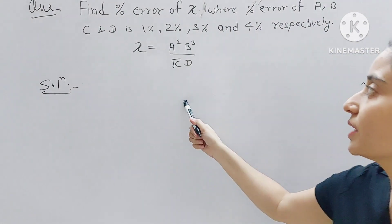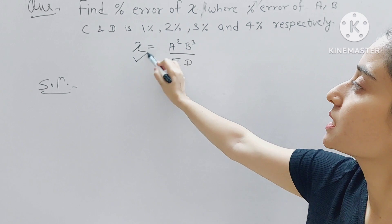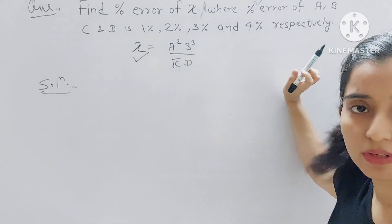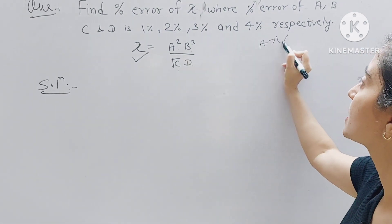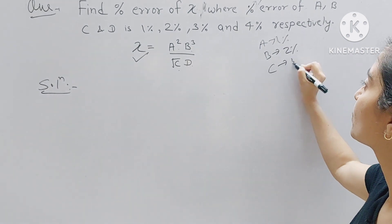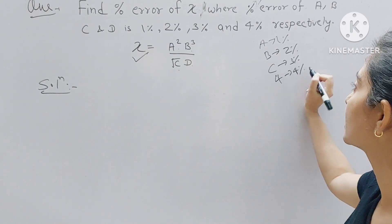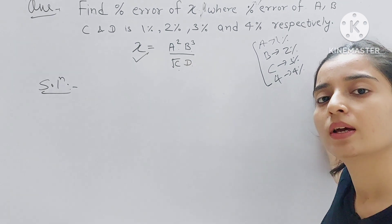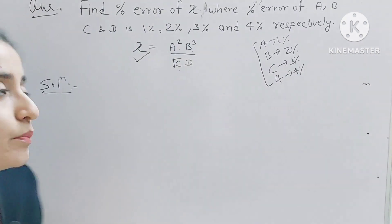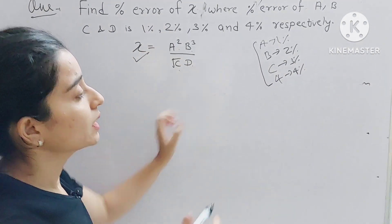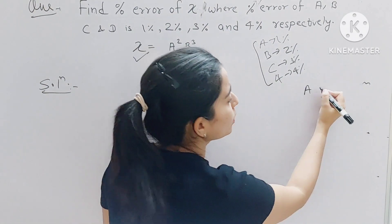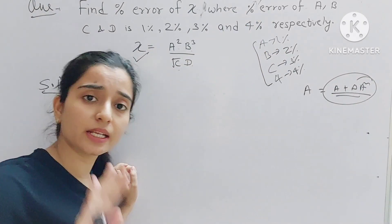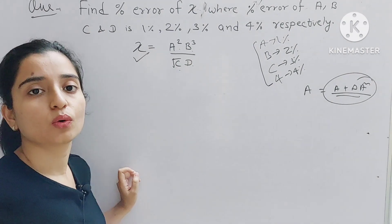Let's solve an example. We are given x and we have to find the percentage error in x. The percentage errors in a, b, c, and d are given as: a = 1%, b = 2%, c = 3%, and d = 4%. I have taken simple data to explain, but in actual questions you will see more calculative data. Here the percentage error is directly given for each variable, so we will first write out the formula for x.